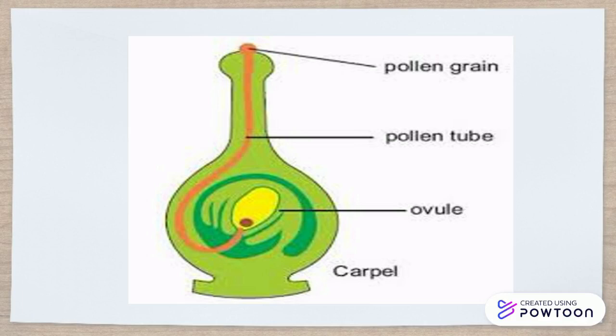For example, the growth of the pollen tube towards the ovule during fertilization in a flower is called positive chemotropism.